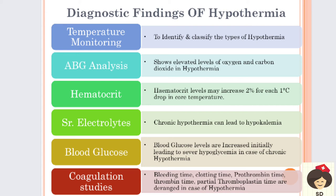Serum electrolytes - in chronic hypothermia, potassium levels will be lower in the blood because lack of metabolic activity causes potassium to move inside the cells. Blood glucose will initially be increased, but in later stages the patient will go for hypoglycemia. Coagulation studies - when the person has vasoconstriction, blood concentration increases and all platelets and RBCs join together forming clotting. Bleeding time, clotting time, prothrombin time, thrombin time, and partial thromboplastin time will all be altered due to increased blood concentration. Chest X-ray is done to find any heart and lung disease.